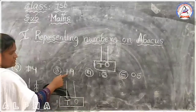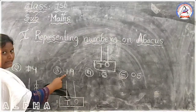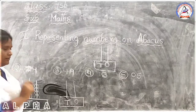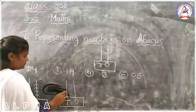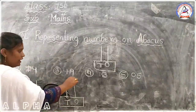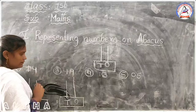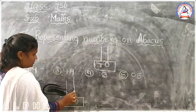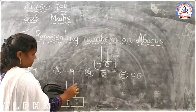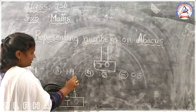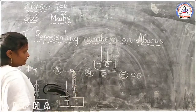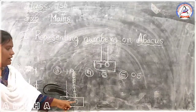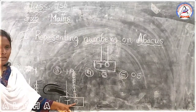What is the given number? 19. What is that? 19. In this 19, how many tens are there? One. And how many ones are there? Nine — 1, 2, 3, 4, 5, 6, 7, 8, 9. It means 1 ten and 9 ones.